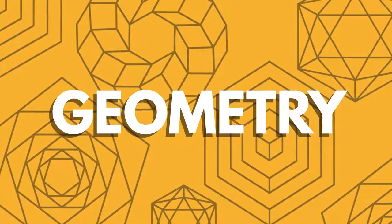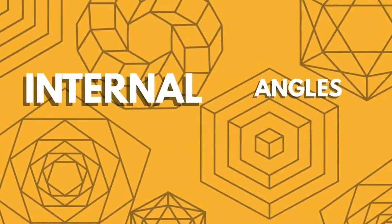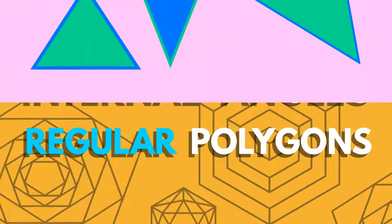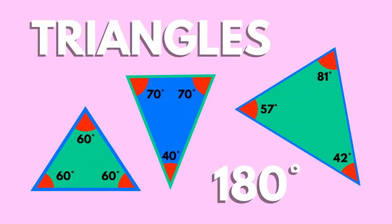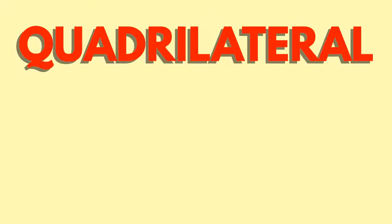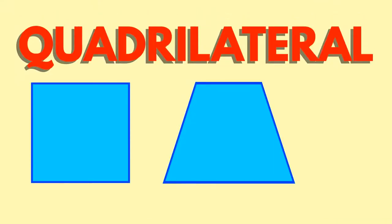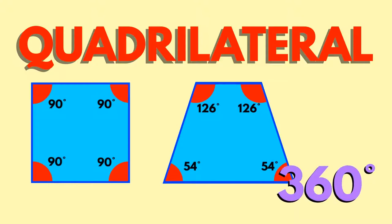It helps a lot if we know some facts about internal angles in regular polygons. In every type of triangle, the internal angles always add up to 180 degrees. Quadrilaterals such as squares and trapeziums have four sides. Their internal angles always add up to 360 degrees.